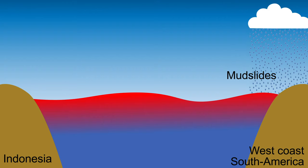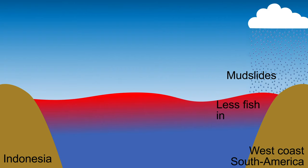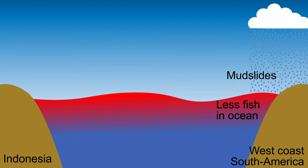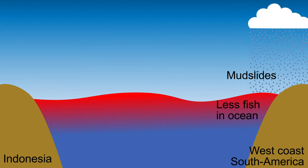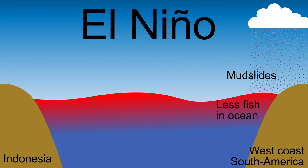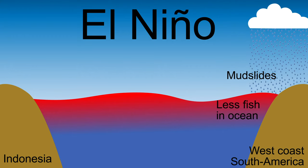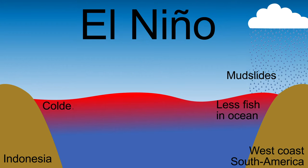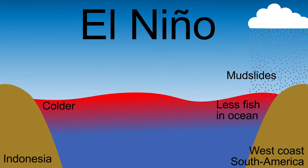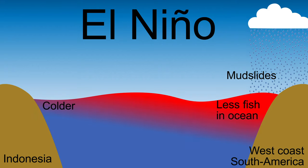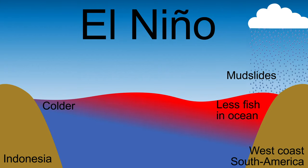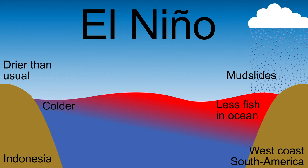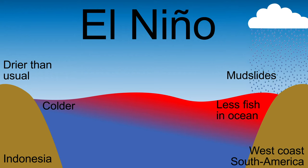The warm ocean water contains much less fish. South American fishermen noticed that this frequently occurs around Christmas, so they call it El Niño, which is Spanish for boy child, referring to the Christ child. In the area around Indonesia the seawater is colder than normal. As a result, air pressure increases and less water evaporates, making it a lot drier than normal. Agriculture and fisheries are thus greatly affected in both areas.